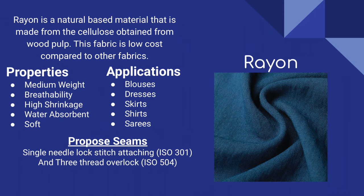Let's talk about rayon. Rayon is a manufactured fiber made from natural sources such as wood and agricultural products that are regenerated as cellulose fiber. There are many types and grades of rayon. It can imitate the feel and texture of natural fibers such as silk, wool, cotton, and linen. The positives are that it's inexpensive, known for its silk-like feel, drapes beautifully, and is breathable — very similar to cotton in that regard.